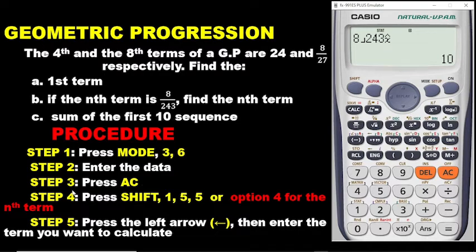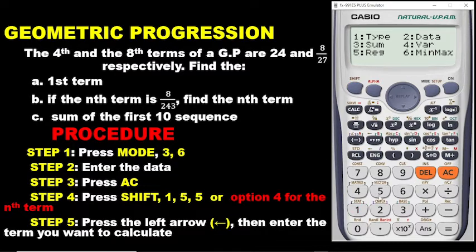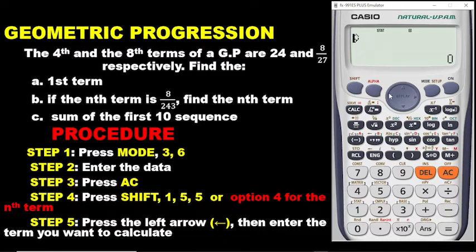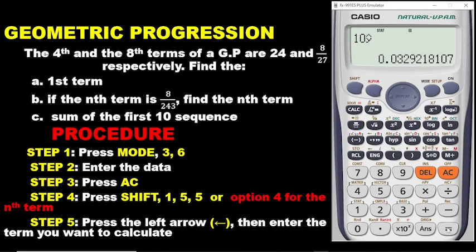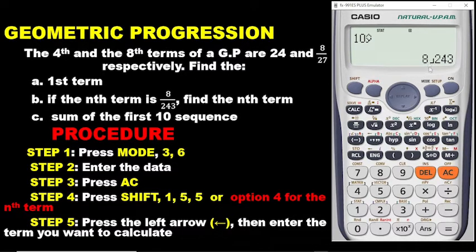You can cross-check by repeating step 4. Press Shift, 1, 5, 5 again. Move the cursor to the left and enter 10. Press equals — the result appears in decimal. Press the SD button to convert to fraction, and you get 8/243, confirming that our 10th term is indeed 8/243.